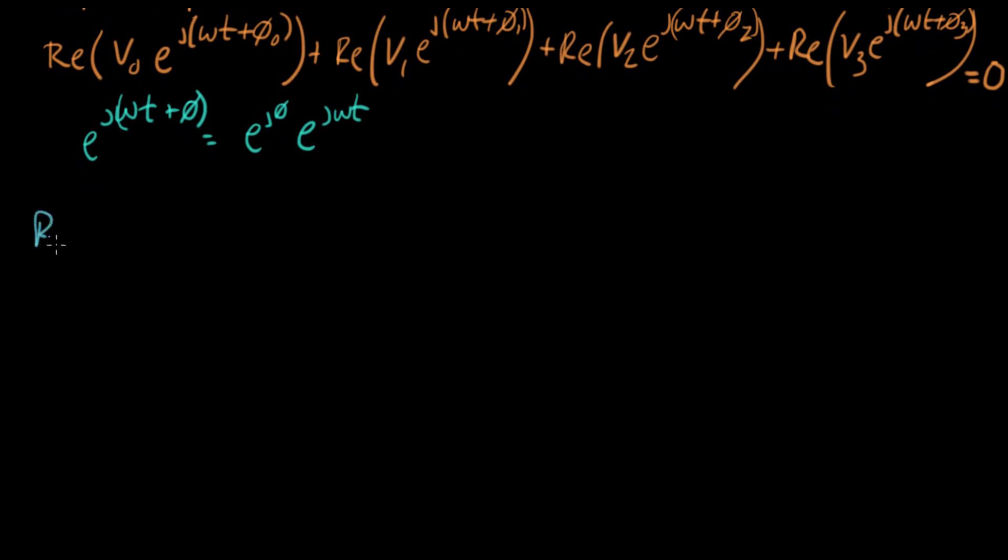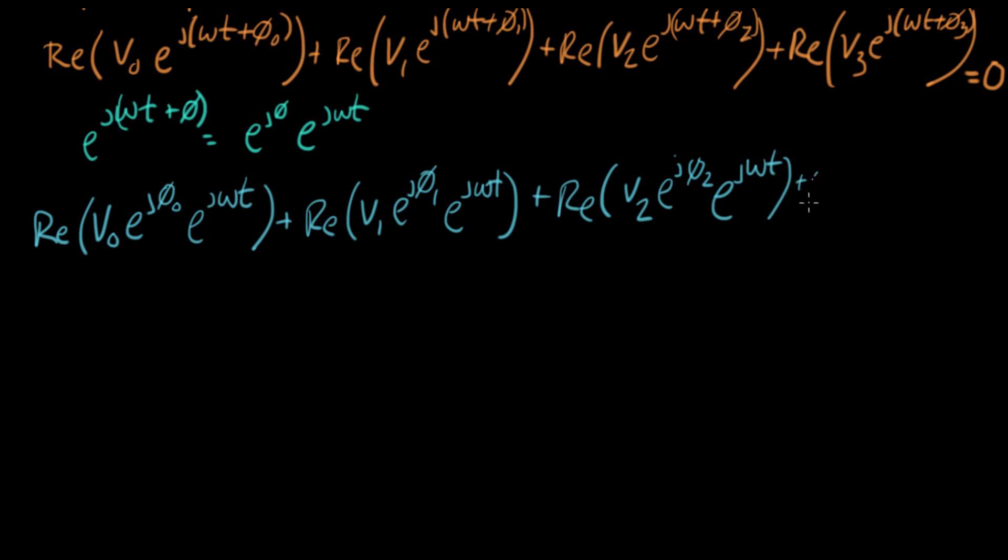So we're still working on this. Let's take apart ωt and φ₀, and I get Re(V₀ e^(jφ₀) e^(jωt)) + Re(V₁ e^(jφ₁) e^(jωt)) + Re(V₂ e^(jφ₂) e^(jωt)) + Re(V₃ e^(jφ₃) e^(jωt)) all equals zero.